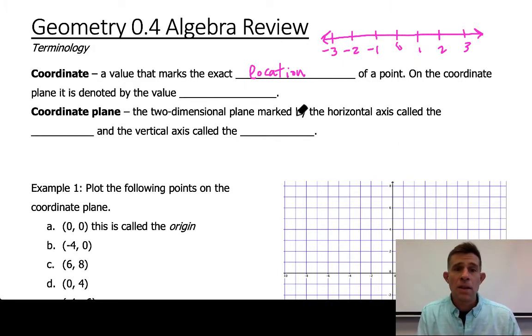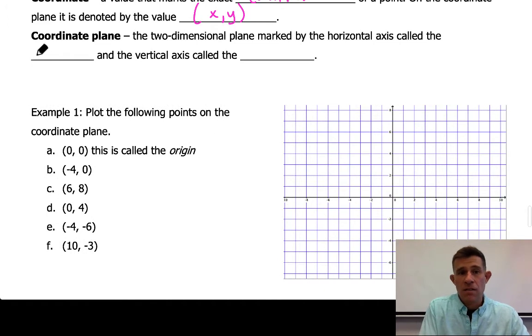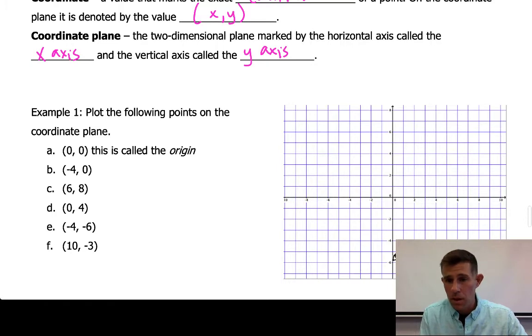So on the coordinate plane it is denoted by the value (x, y). Now this is known as an ordered pair and it has a specific location in both the x or the horizontal axis and y, the vertical axis. So the coordinate plane is simply a two-dimensional plane that is marked by these horizontal and vertical axes known as the x-axis and the y-axis. The horizontal is the one that moves across the plane left to right like the horizon and the vertical axis is the y-axis and that moves up and down in the plane kind of like a ladder.